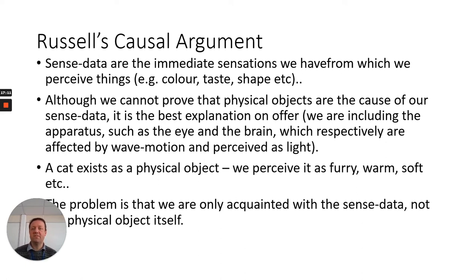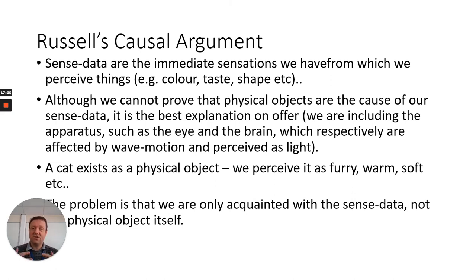This is what's known as the veil of perception, and both Locke and Russell consider this to be something that cannot be overcome. We are essentially behind our sensory apparatus — sight, hearing, and so on — and these representations do not give us direct access to the objects themselves.